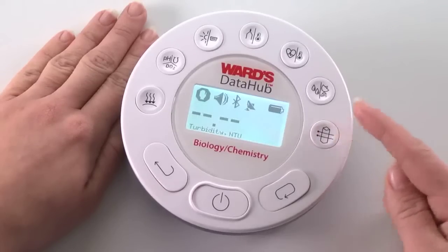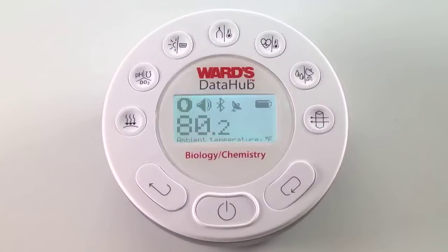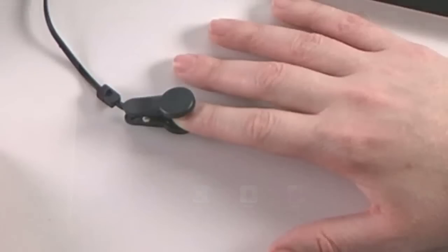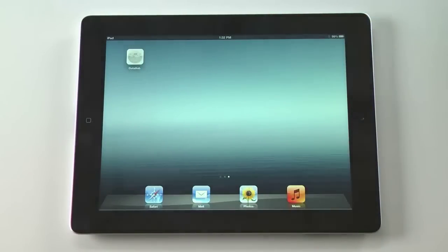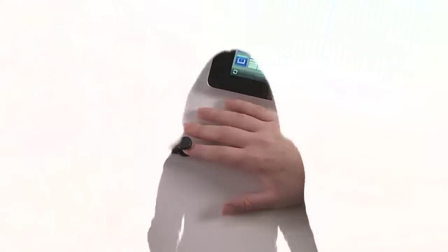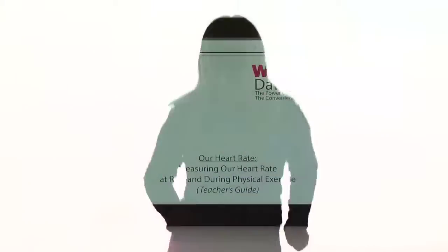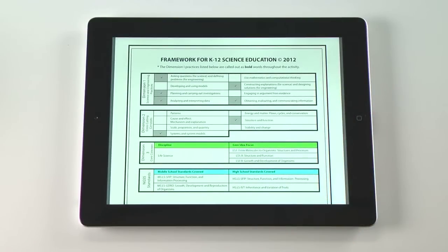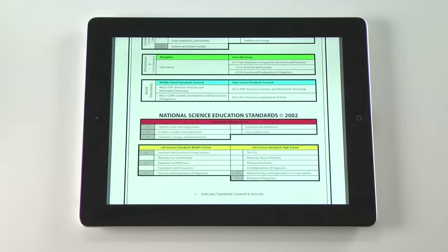In less than three minutes we can use the DataHub, the included heart rate clip, and an iPad to conduct a common life science experiment: measuring heart rate at rest and during exercise. This popular activity covers common science standards of structure and function in living systems, regulation and behavior, diversity and adaptations of organisms, matter, energy, and organization in living systems.